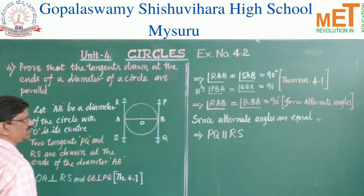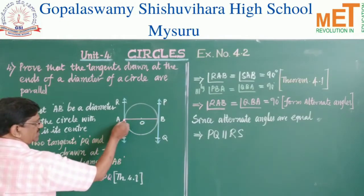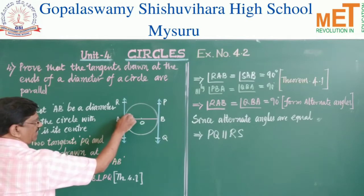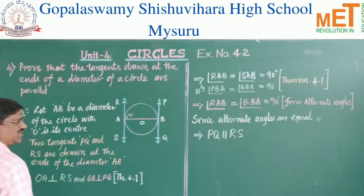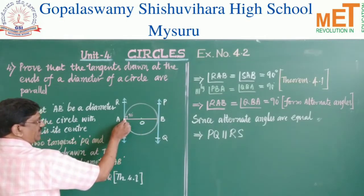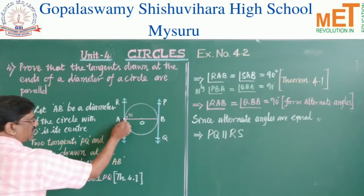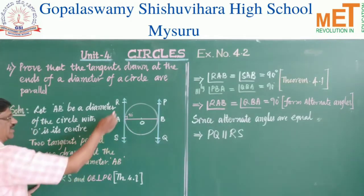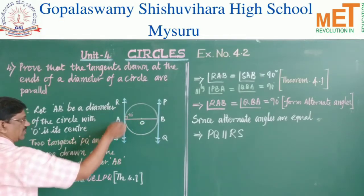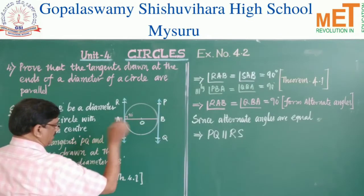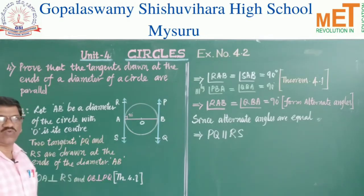In Theorem 4.1, you have studied that whenever the radius and the tangent meet each other, they form 90 degrees at the point of contact. Similarly here, since RS is drawn at end point A, the radius and the tangent at the point of contact give 90 degrees. Therefore OA is perpendicular to RS, and similarly OB is perpendicular to PQ, according to Theorem 4.1.